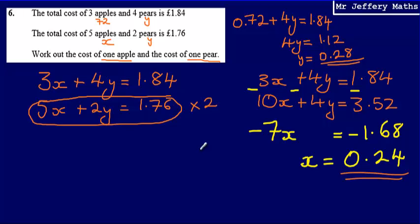So final answer would be the cost of a pear is 28p, and the cost of an apple is 24p.